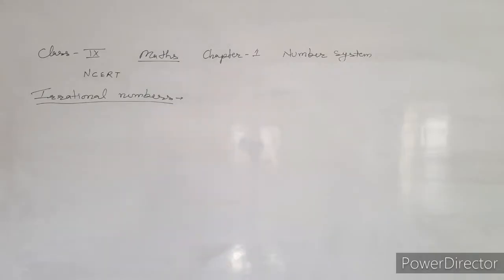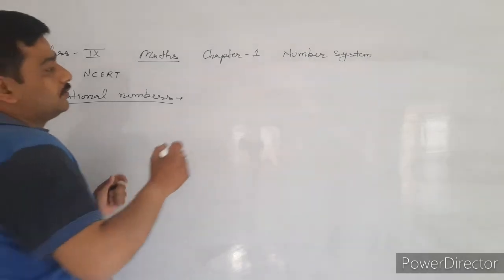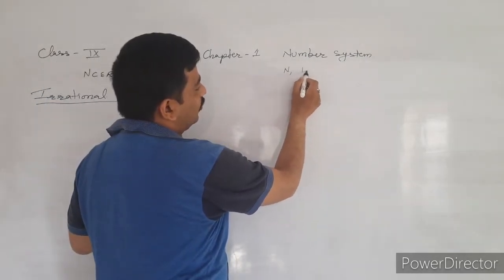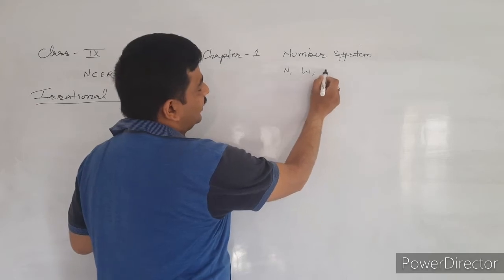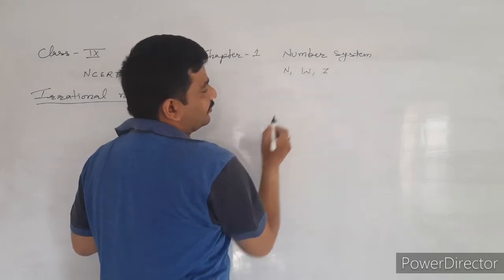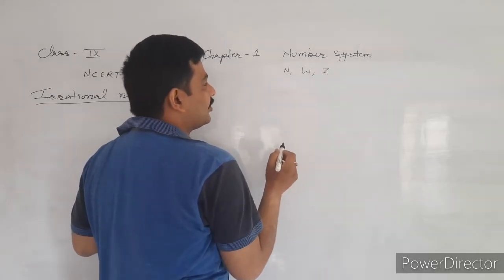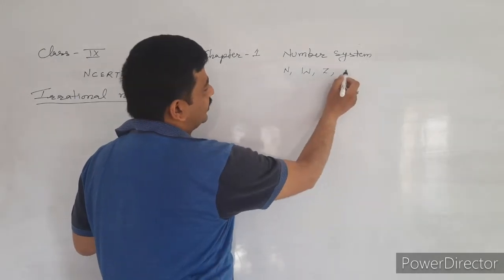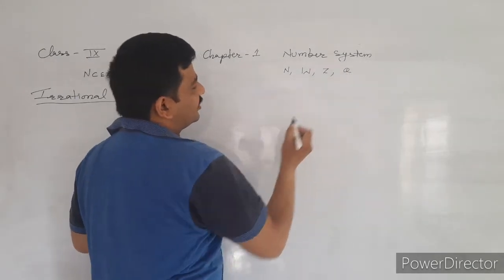Hello students. In the previous class we studied about some numbers like natural numbers, whole numbers, integers — represented by Z or I — and rational numbers, represented by Q.